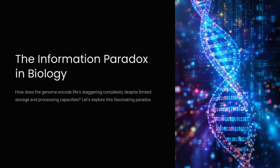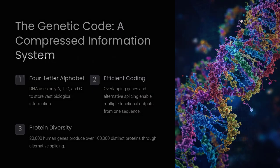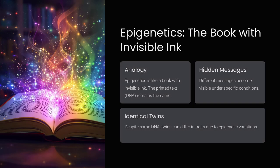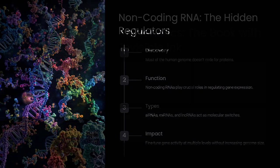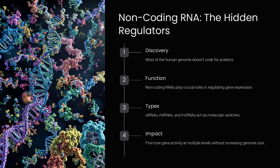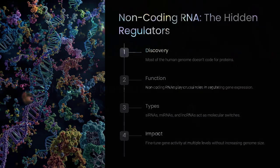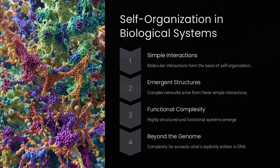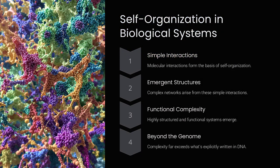The information paradox in biology challenges our understanding of how life encodes and processes vast amounts of information within the seemingly limited storage of the genome. How can something as small as a DNA molecule hold the instructions for building and operating a complex organism, from a bacterium to a human?